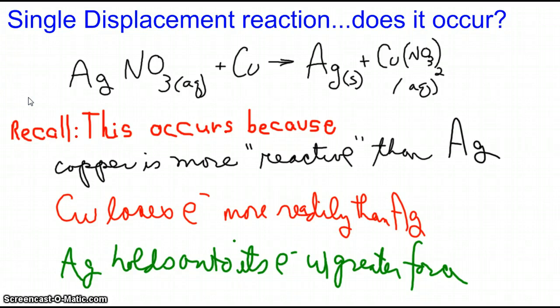We've got a single displacement reaction as seen here. I have silver nitrate plus copper metal yields silver metal plus copper nitrate. And the reason why this occurs, if you consult your activity series table, the copper is more reactive metal, so it can displace the silver.